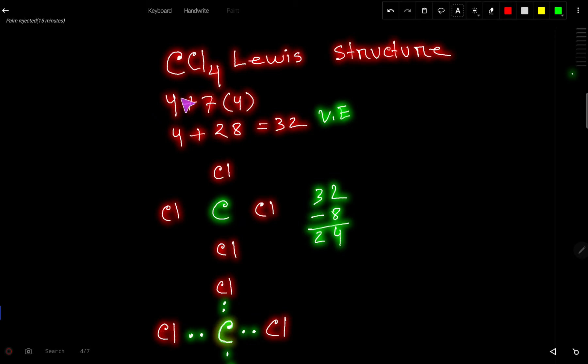On the other hand, chlorine is an element of group 7A, that is why it has seven valence electrons. But here we have four atoms of chlorine, so we have to multiply by four: four plus seven times four equals 28, equal to 32 valence electrons for CCl4.